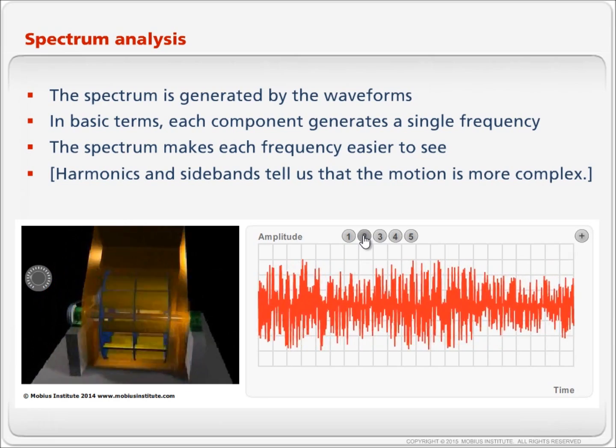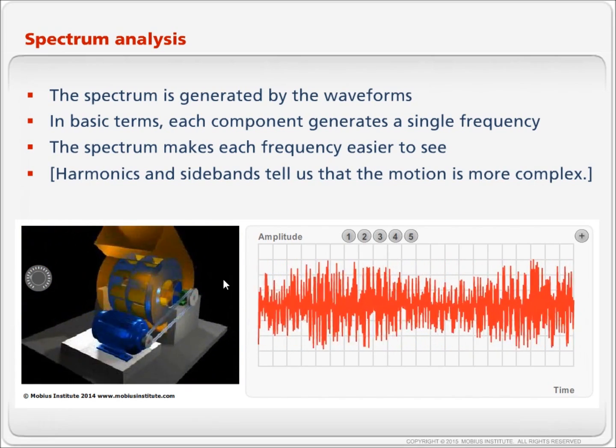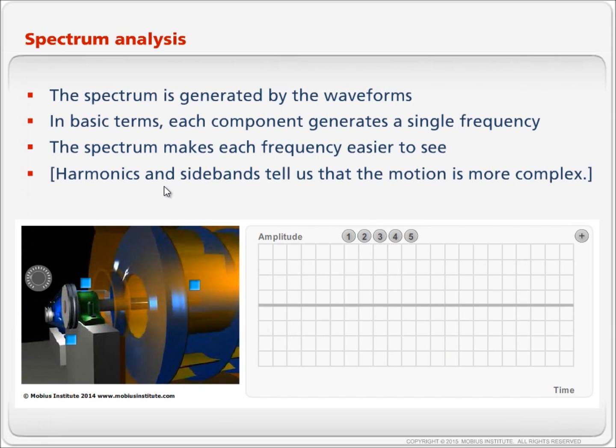If we look at the raw signal from a vibration sensor, perhaps placed on this bearing or any one of the bearings, it would appear quite complicated. But let's break it down into a few simple areas. First I'm going to click this button which turns on the vibration from this grey shaft and the grey pulley. All the vibration comes from this bearing here. Imagine there's an accelerometer sitting on this bearing.